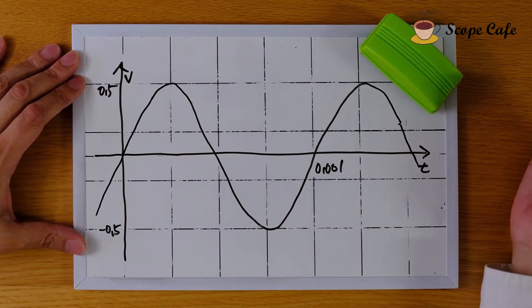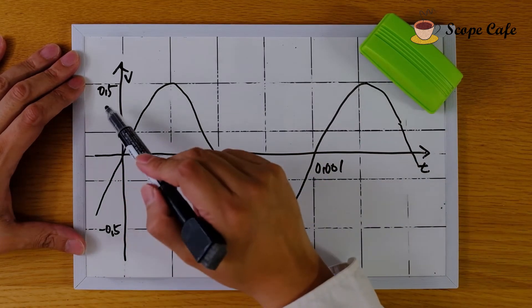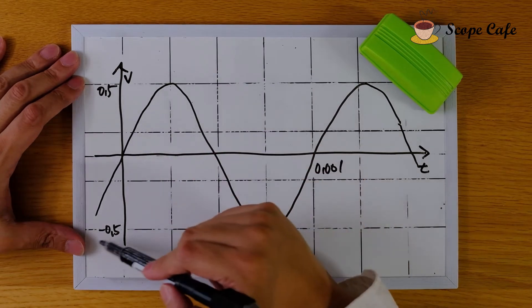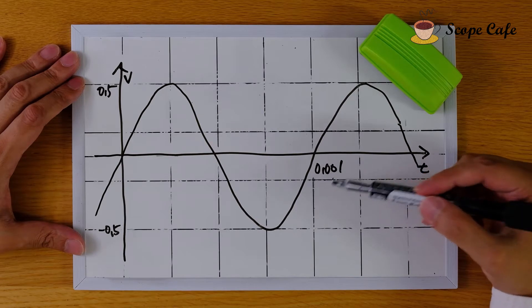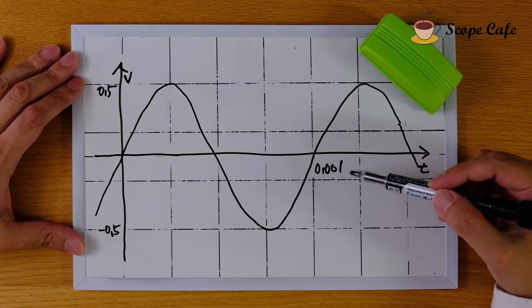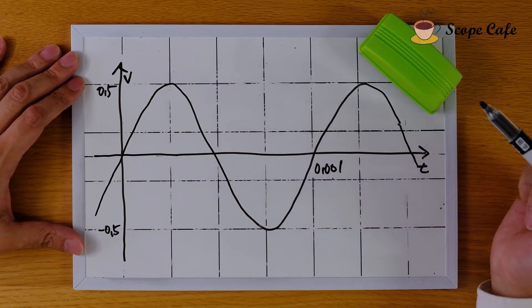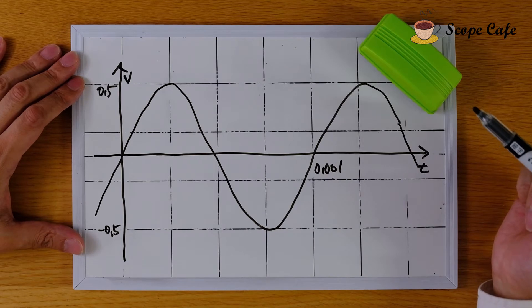Okay, so the maximum point is 0.5V, and the minimum point is minus 0.5V. One period is 0.001 seconds, because the frequency is 1kHz. So what type of graph did you write?